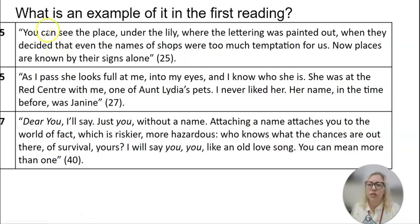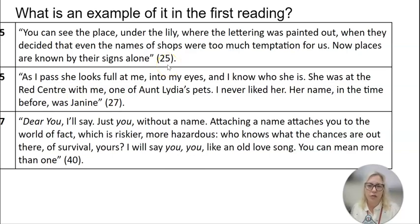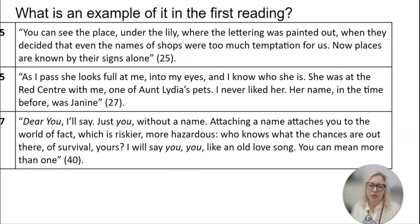How about this one from chapter five: 'You can see the place under the lily where the lettering was painted out when they decided that even the names of shops were too much temptation for us. Now places are known by their signs alone.' Names have been eliminated in terms of lettering so that handmaids aren't reading anything — as if just a word there to be read is a temptation. You can spend some time thinking about the effect of that one.